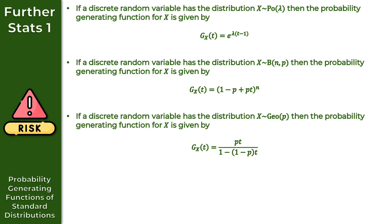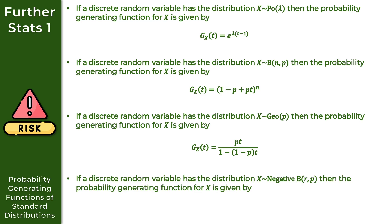Finally, the last result: if we have a discrete random variable X following a negative binomial distribution with parameters R and P, then the probability generating function for X in terms of T is equal to PT all over one minus one minus P times T, all to the power of R. These are the four results given in the formula book, but it's important we can derive them from first principles. Let's take a look at some practice questions.